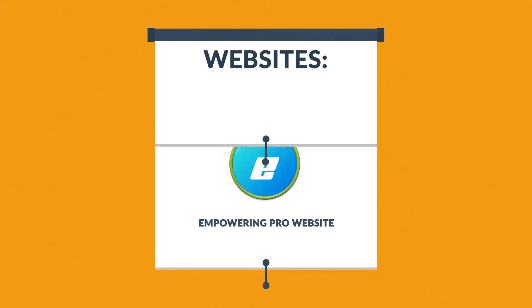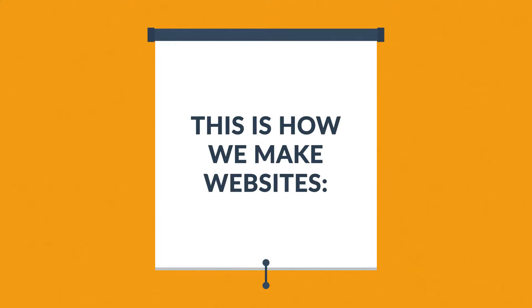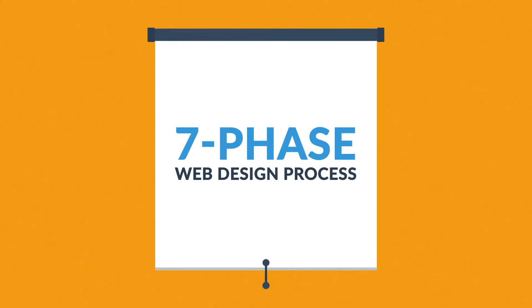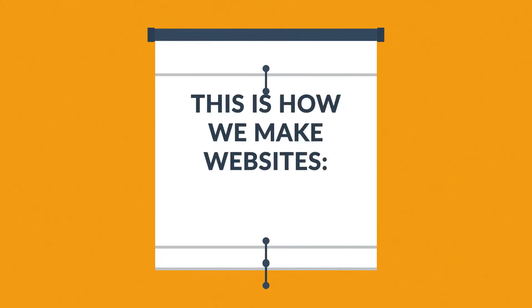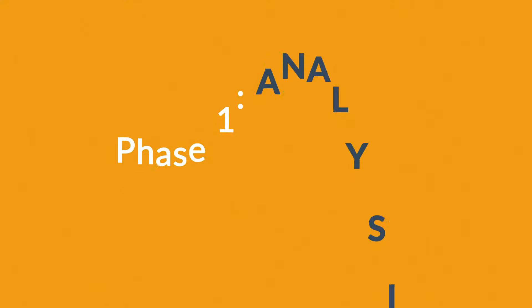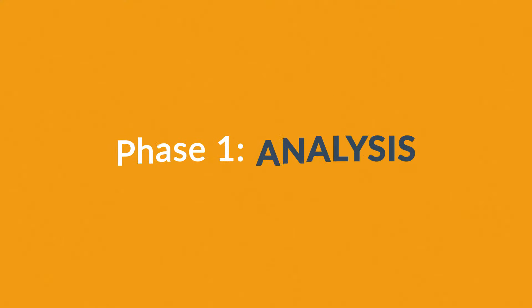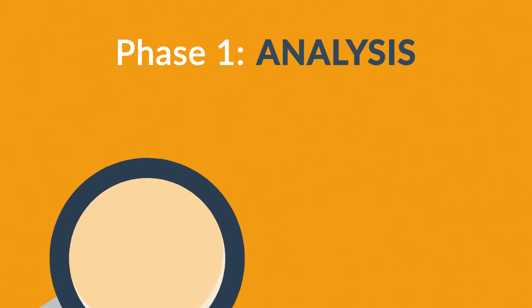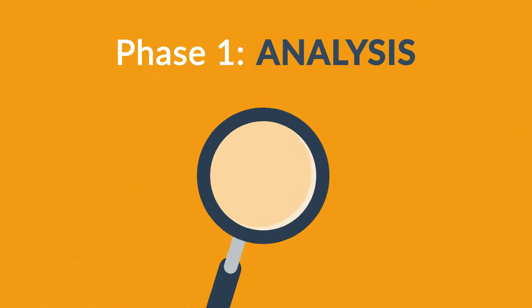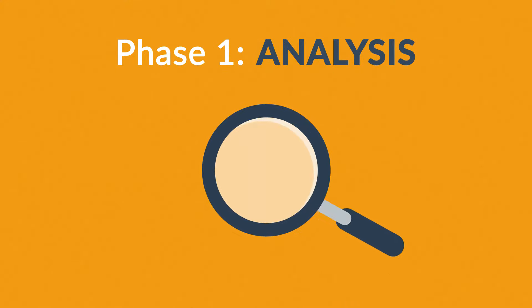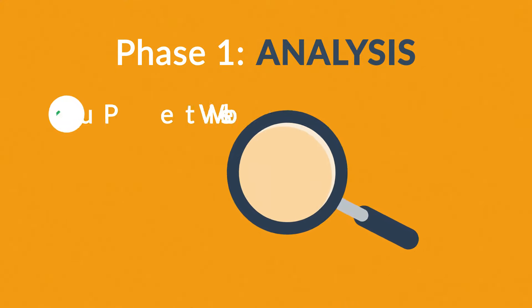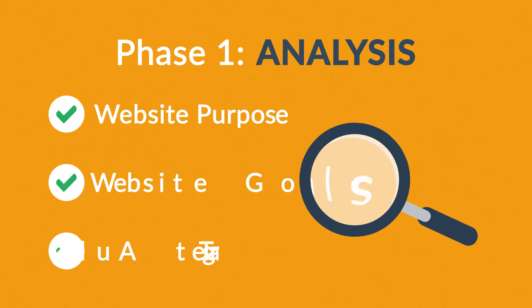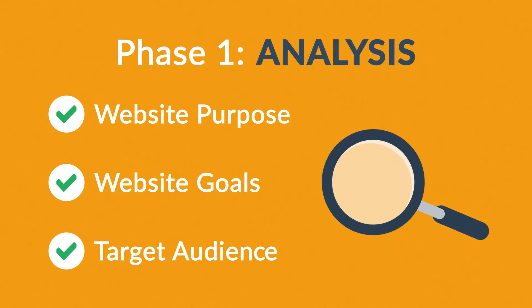This is how we make websites, by following this seven-phase web design process. Phase 1: Analysis. The first step is always about information gathering, identifying things like the website purpose, goals, and target audience.